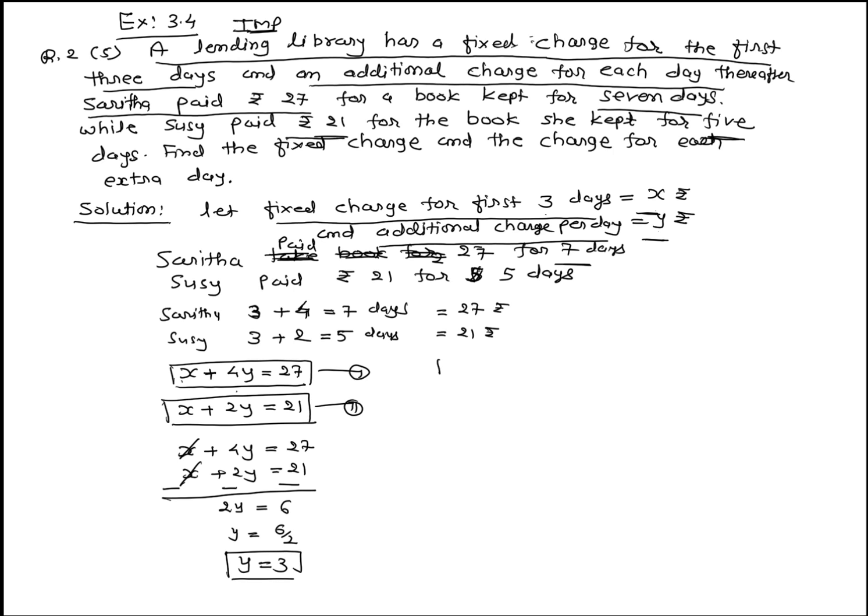Y equals 3. Now put Y equal to 3 in any equation. X plus 2Y equal to 21, X plus 2 into 3 equal to 21, X plus 6 equal to 21, X equal to 21 minus 6, X equal to 15. This 15 rupees is the fixed charge.